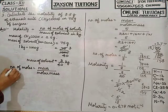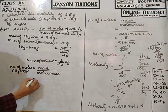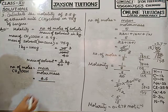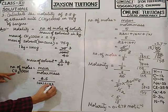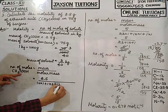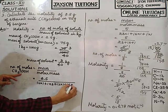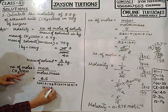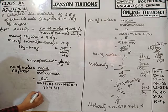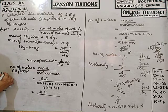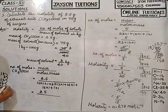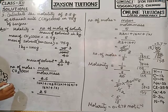Number of moles of ethanoic acid CH₃COOH: mass is 2.5 grams. Molar mass: carbon 12 × 1 + hydrogen 1 × 3 + carbon 12 × 1 + oxygen 16 × 1 + oxygen 16 × 1 + hydrogen 1 × 1 = 12 + 3 + 12 + 16 + 16 + 1 = 60. So number of moles = 2.5 ÷ 60.